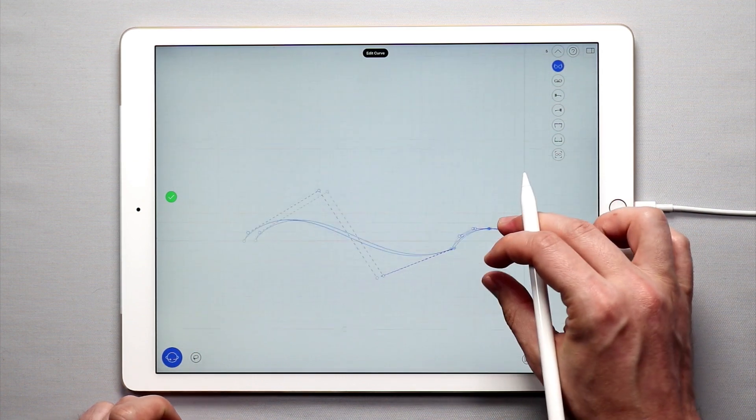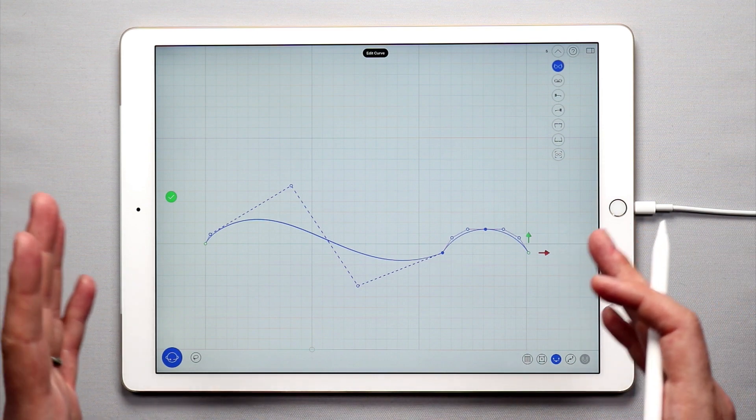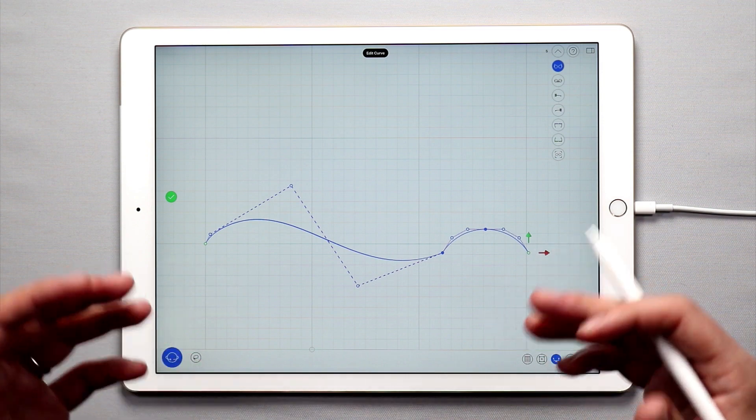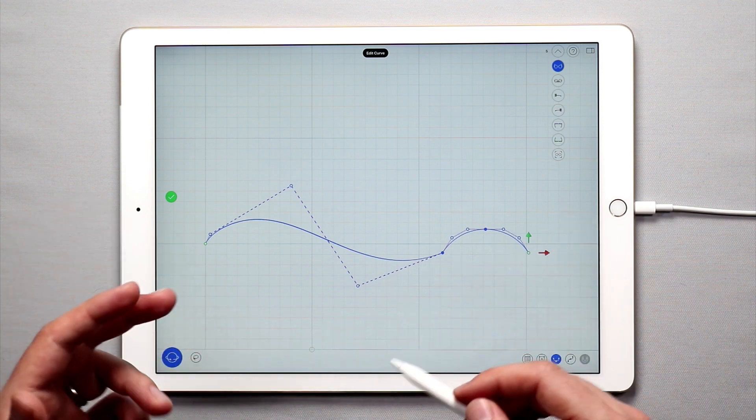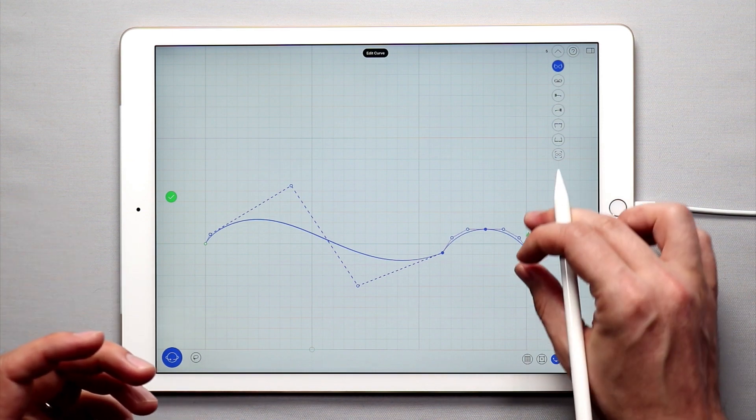That's pretty much all there is to it when you're editing points. I definitely recommend when you want to edit curves or kind of get used to this—practice, practice, practice. Enter into UMake, just play around moving points, and you will see that it's really easy, really fun, and I hope this tutorial is helpful.